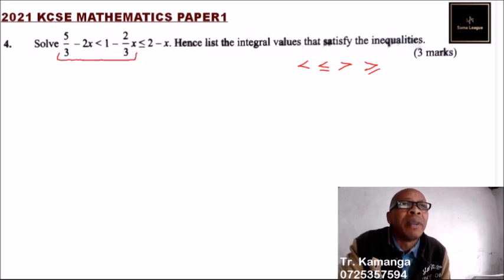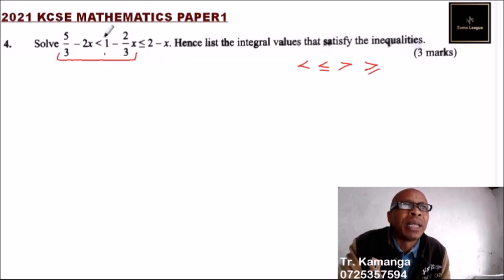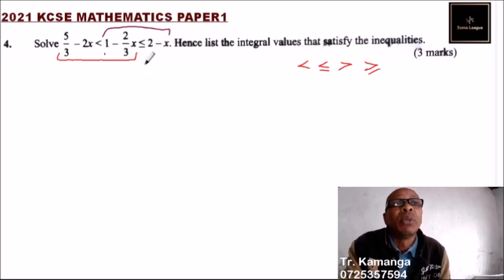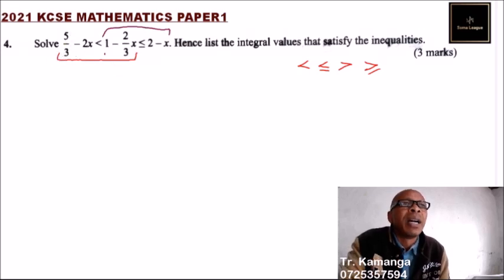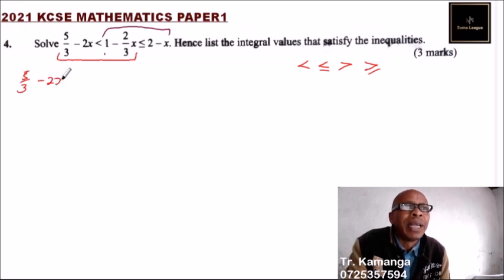We get the value of x from each inequality, then combine them to find the integral values. Taking the first part: 5 over 3 minus 2x less than 1 minus 2 over 3x. We put like terms together, taking x to one side.